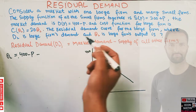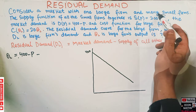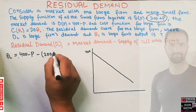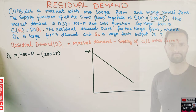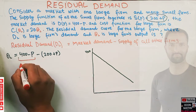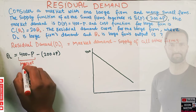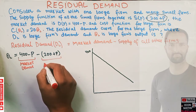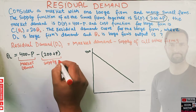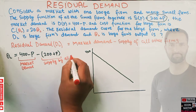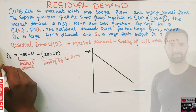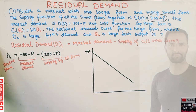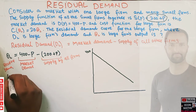From this we subtract the supply of all other firms, which is 200 + P. So the formula becomes: Q_L = (400 − P) − (200 + P), where the first term is total market demand and the second term is supply by all other firms.